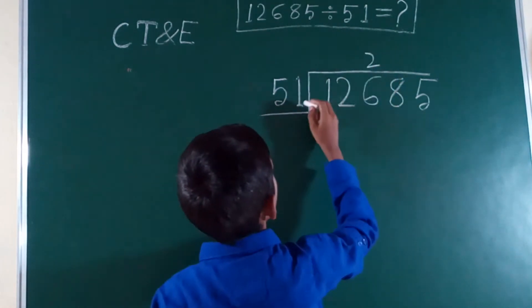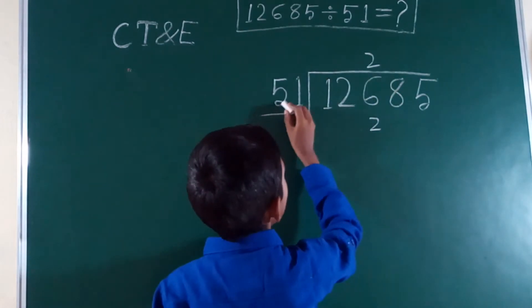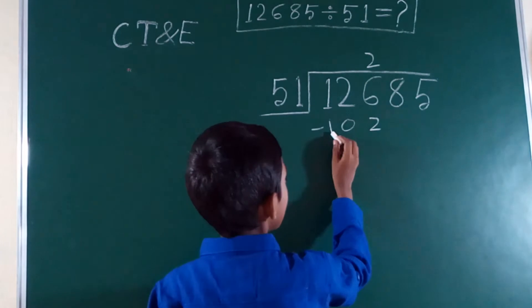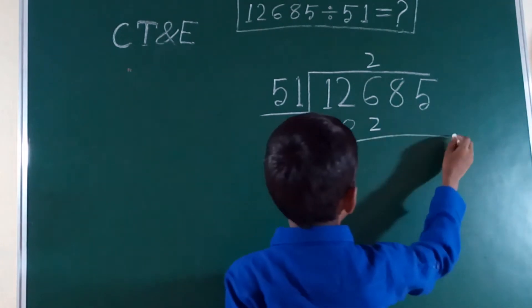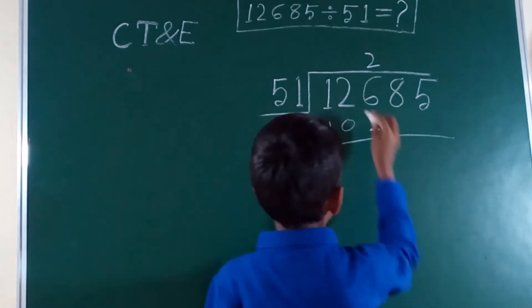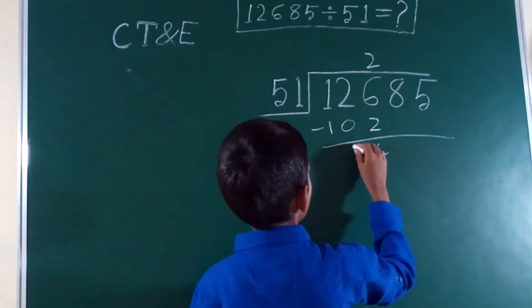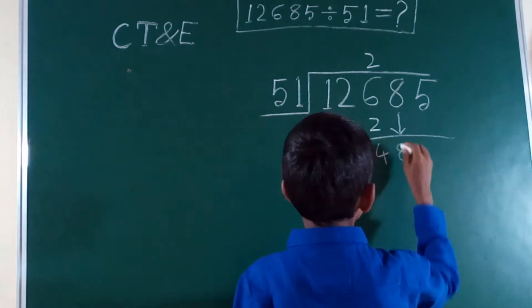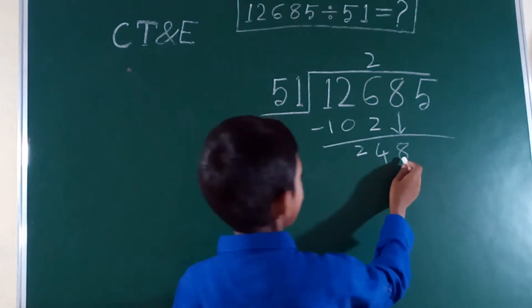Then 2 times 1 is 2, 2 times 5 is 10, so we got 102. We have 126 minus 102 is 24. And 8 will come down, so it became 248.